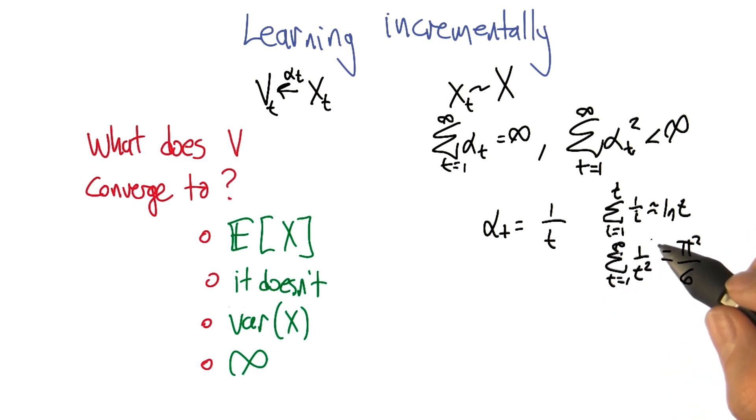But if you look at the sums of the squares, that's actually a well-known problem called the Basel problem, and it turns out to actually be pi squared over 6, which is kind of crazy. But there it is, which is a finite value.